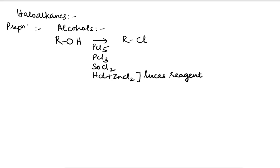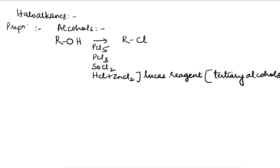HCl plus ZnCl2 is called Lucas reagent. This Lucas reagent helps us to distinguish between primary, secondary, and tertiary alcohols. Tertiary alcohol reacts quickly in Lucas reagent compared to secondary, compared to primary. For PCl5, the byproducts will be POCl3 and HCl.